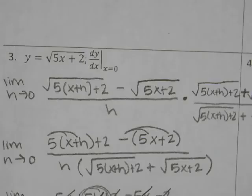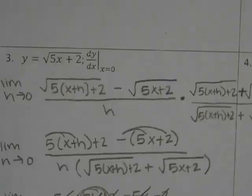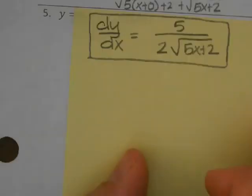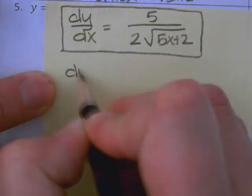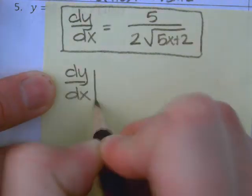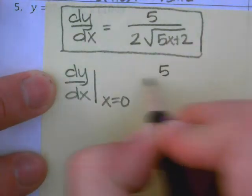We're going to have two answers. What does the original problem want us to find? They want us to evaluate the derivative for when x equals 0 — that's why they said dy/dx evaluated at x=0. So now I'm going to take that equation and say dy/dx evaluated at x=0, and go ahead and plug that in.